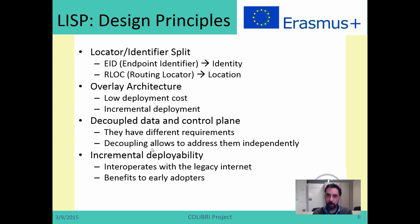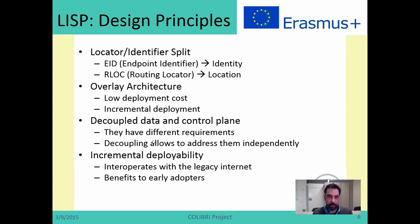EIDs are responsible for identifying the identity of a node, while RLOCs are responsible for locating the node. An IP address today has two meanings: it is both the identity of a node and the way we use to reach that node — its location. You cannot change the location without changing the identity. This is precisely what LISP addresses by splitting identity and location into two different sets of addresses: EIDs for identity and RLOCs for location.